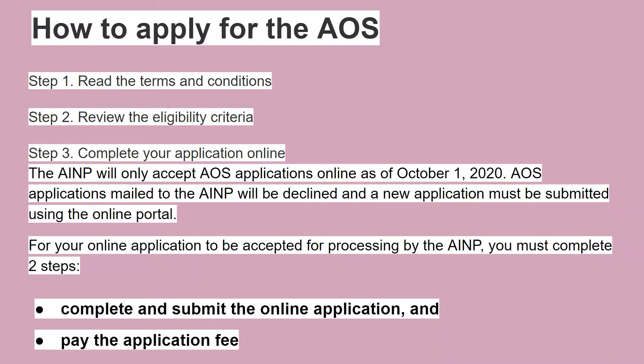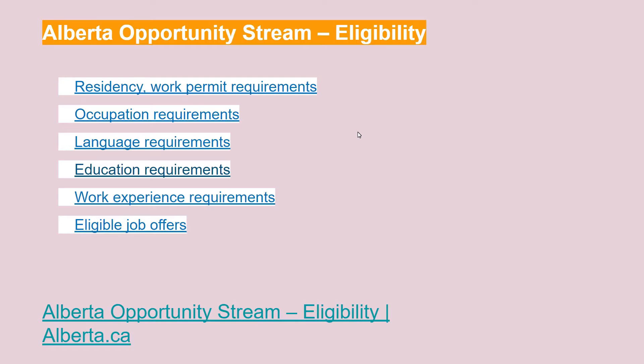So how do you apply for the Alberta Opportunity Stream? First, you have to read the terms and conditions. Second, review the eligibility criteria before applying, because if you don't meet the eligibility criteria, you are going to waste your time. Third, you have to complete your application online, which I will explain later in this video.